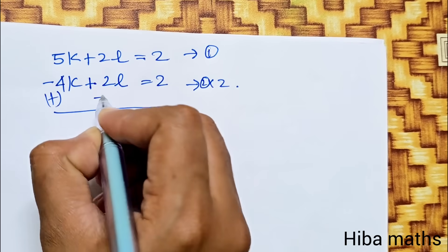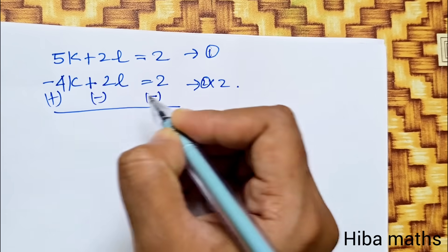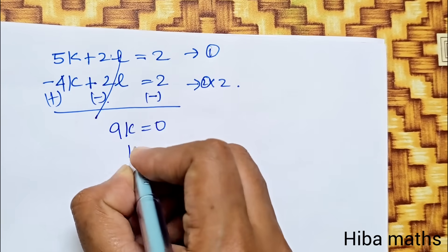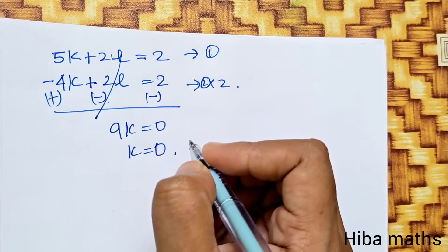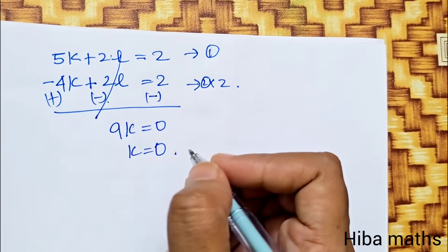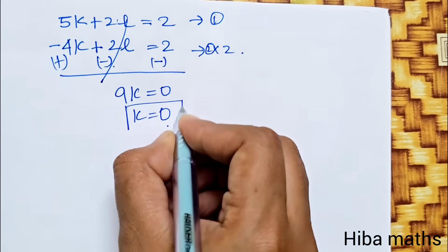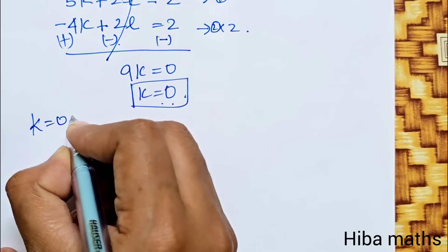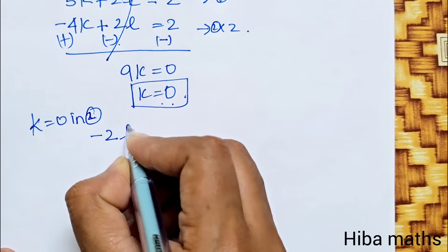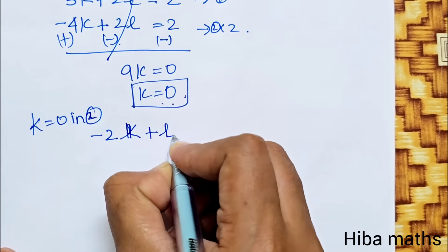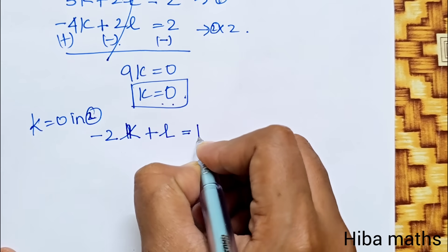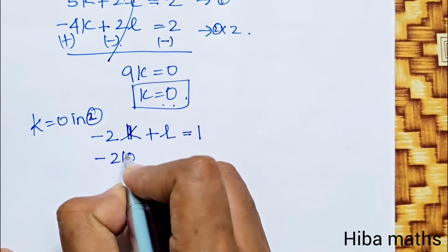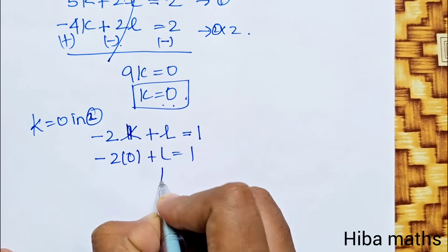Now solving the two equations: equation 1 is 5k + 2l = 1 and equation 2 is -2k + l = 1. Using the elimination method, we get 9k = 0, so k = 0. Substituting k=0 into equation 2: -2(0) + l = 1, therefore l = 1.